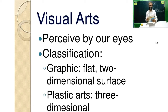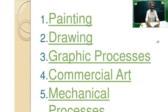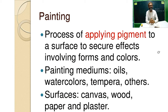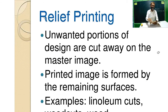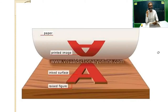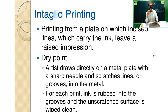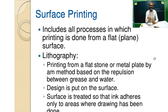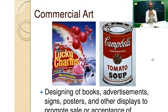The visual arts include so many forms like graphic painting, drawing, graphic processes, and commercial art. You can read the rest in your own free time. We have here examples of relief printing — these are like stamps — intaglio printing, etching, ancient forms of printing, surface printing, and the modern form of that is silkscreen.